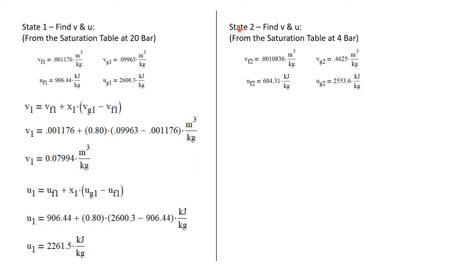Now let's find the same properties for state 2. So we'll go back to the saturation table, but now we'll be looking at 4 bar instead of 20 bar. And in that table, we'll get v_f and v_g, u_f and u_g. And I will notate them with a 2 to indicate that these are u_f and u_g, v_f and v_g for state 2.